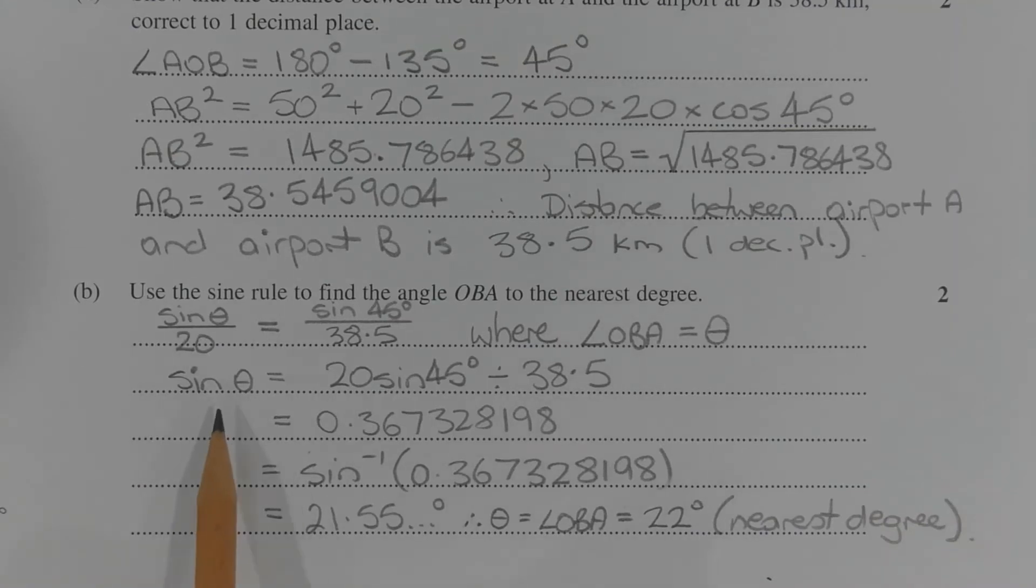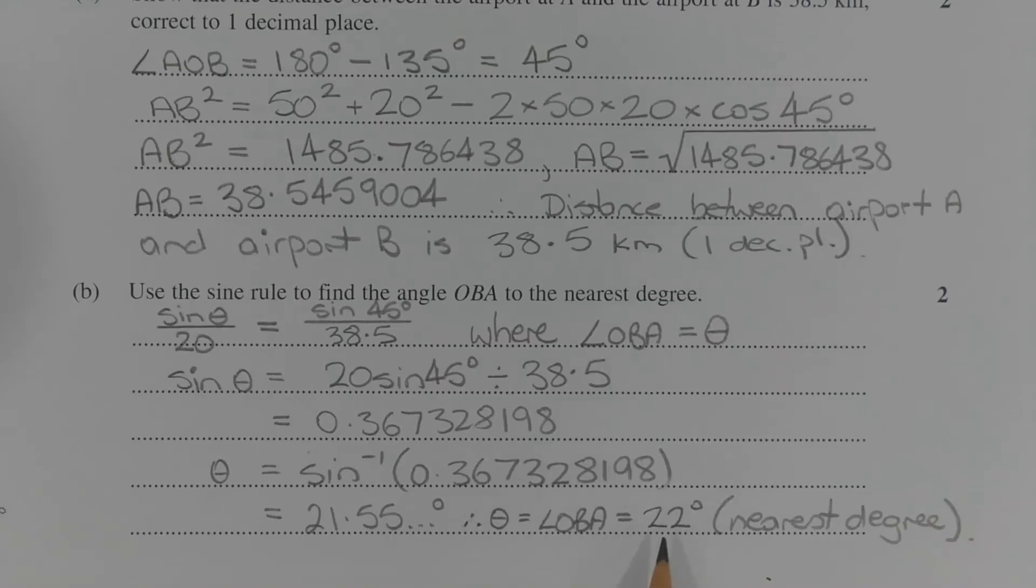To make theta the subject, we take the inverse sine of both sides. So theta is equal to inverse sine of 0.367328198, which equals 21.55 and so on degrees, which rounds to 22 degrees. Therefore, theta, which equals angle OBA, which equals 22 degrees, correct to the nearest degree.